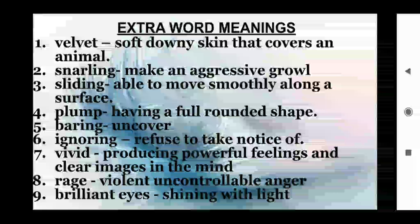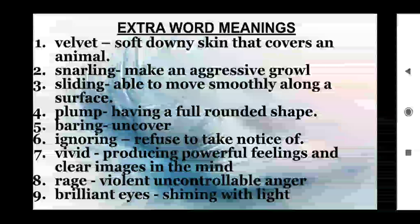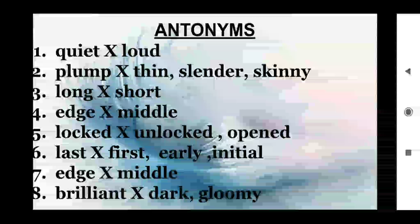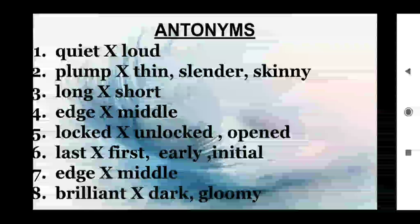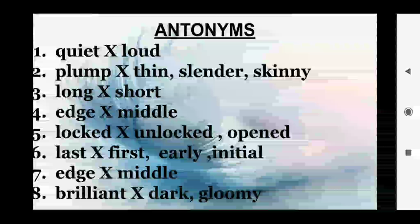Vivid — producing powerful feelings and clear images in the mind; rage — violent uncontrollable anger; brilliant eyes — shining with light. Some of the antonyms from the poem: quiet/loud, plump/thin or slender or skinny, long/short, edge/middle, locked/unlocked or opened, last/first or early or initial, edge/middle, brilliant/dark or gloomy.